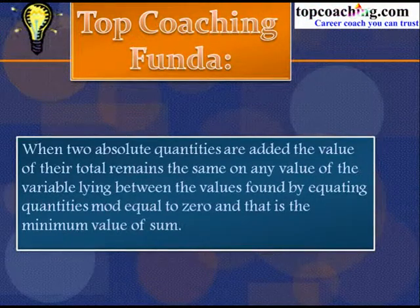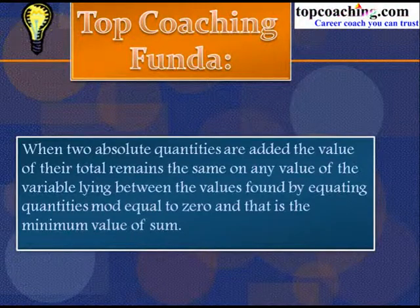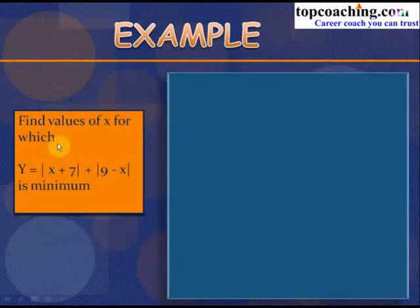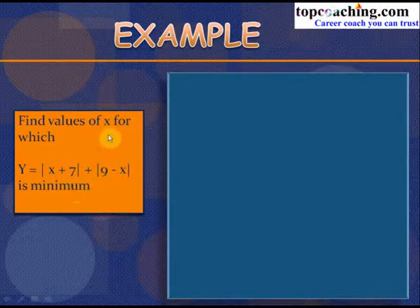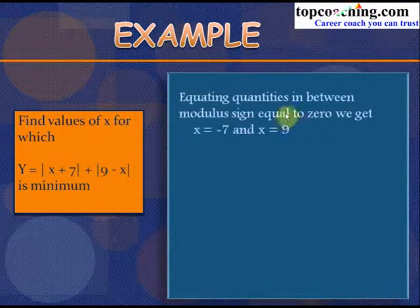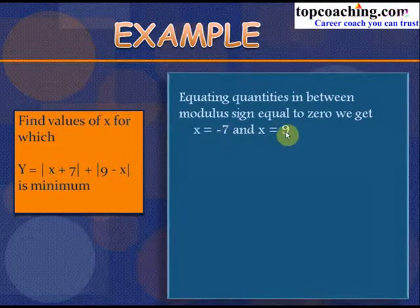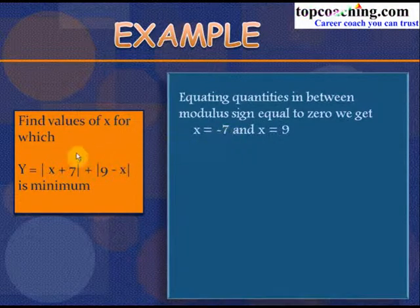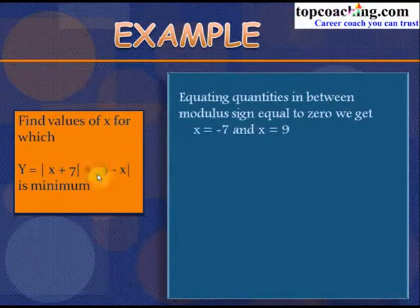For example, find the values of x for which y = |x + 7| + |9 − x| is minimum. Equating to zero: x + 7 = 0 gives x = −7, and 9 − x = 0 gives x = 9. By the result, the value of y is minimum for all x between −7 and 9.